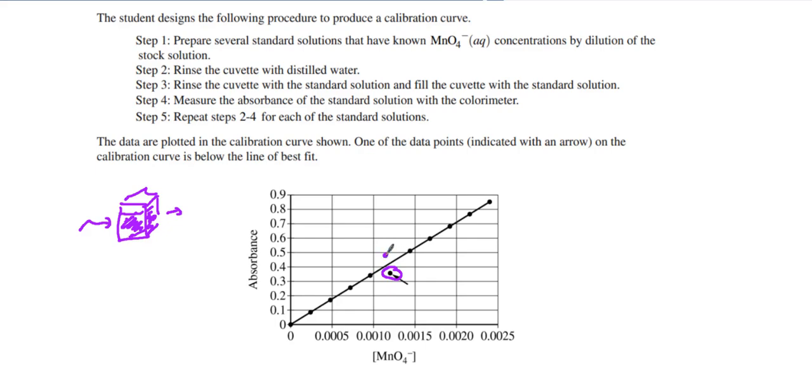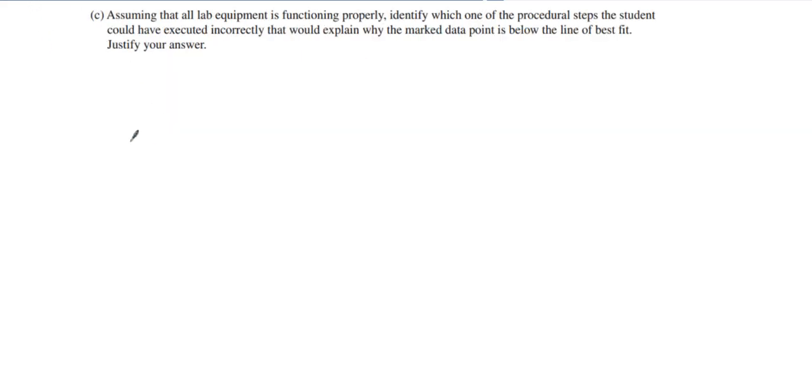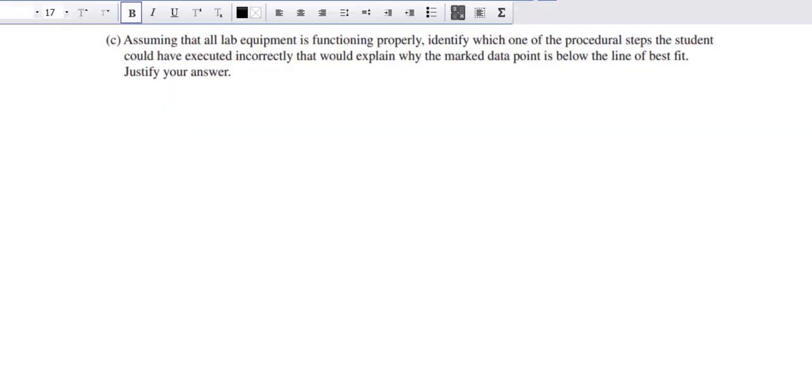If it absorbs more, that means we have something affecting the absorbance. We have maybe fingerprints on it. Maybe we mishandled and mislabeled something. But if it's less, that means my solution is absorbing less light, which means my solution must be diluted in some way.